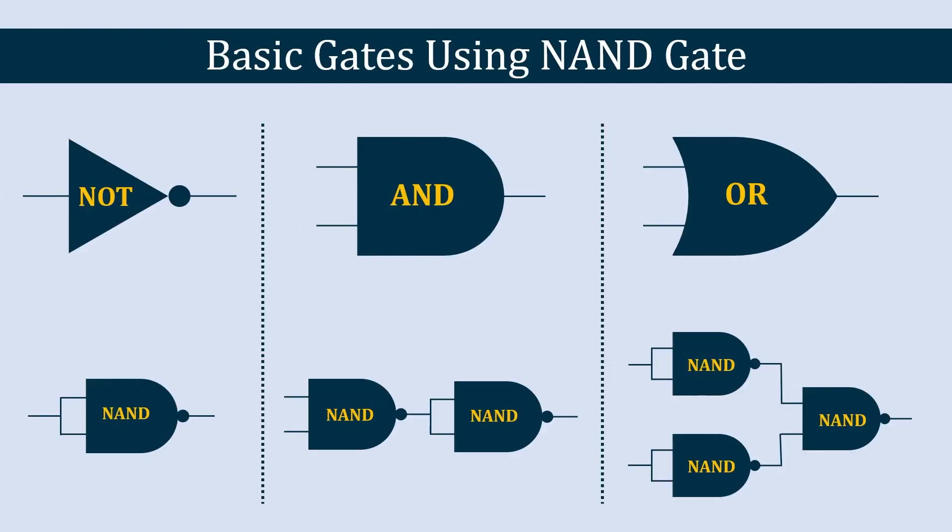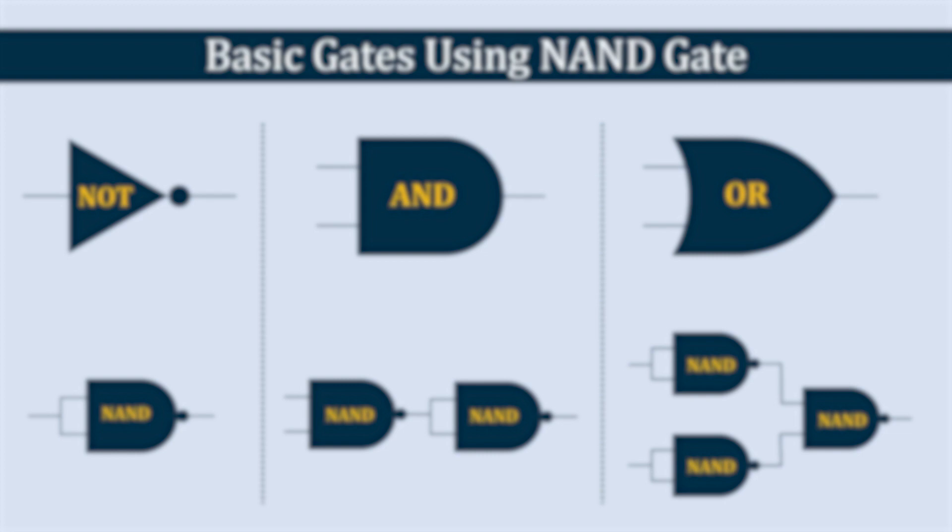So we have now created a NOT gate, an AND gate, and an OR gate — all three basic gates — using only NAND gates. Since any gate can be built from NAND gates, this is why the NAND gate is called a universal gate. Next, we will create XOR and XNOR gates using NAND gates, so watch the next video to see that.